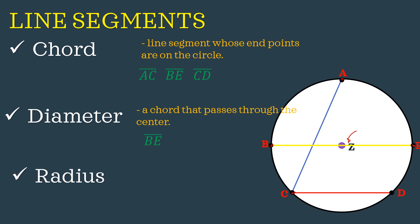The third one is called the radius. A radius is just only half of a diameter. So from our line segment BE, getting half of it gives us a radius. Our radius for this figure is line segment BZ, or we may also have line segment ZE, or EZ.